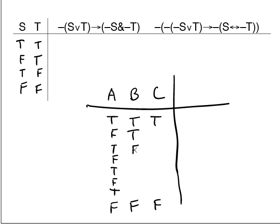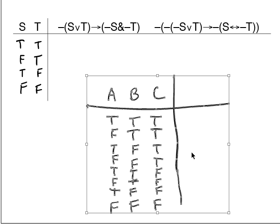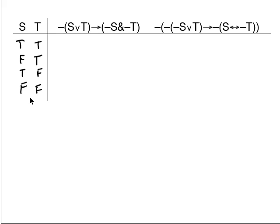In the second column, alternate in pairs: true, true, false, false, true, true, false, false. In the third column, alternate by fours: four trues, four falses. This is just an easy trick for generating all the possible combinations when you have three sentence letters. I've said in class that I won't give you any tables to do that have got more than three sentence letters.